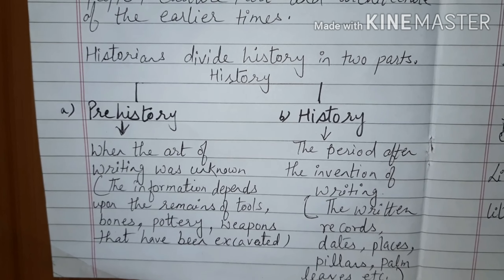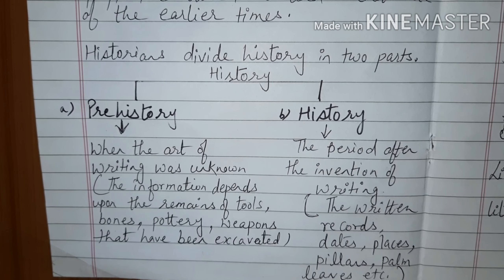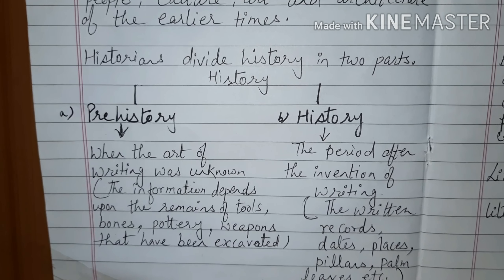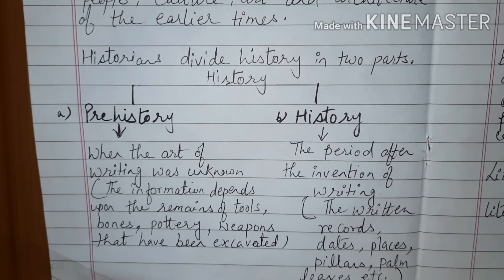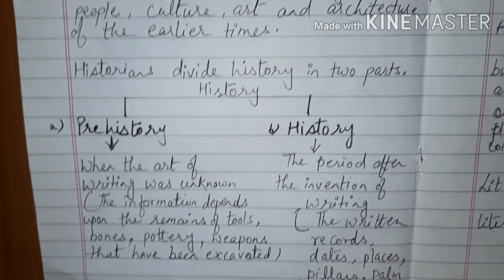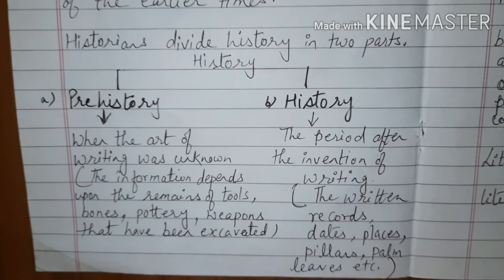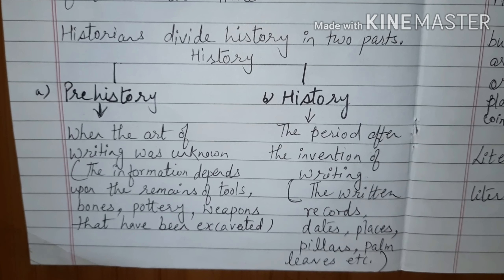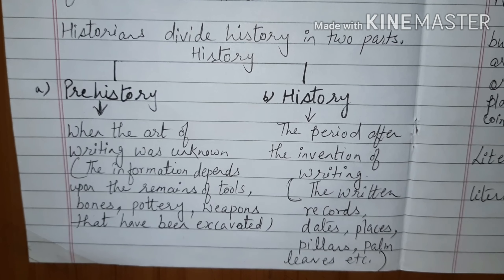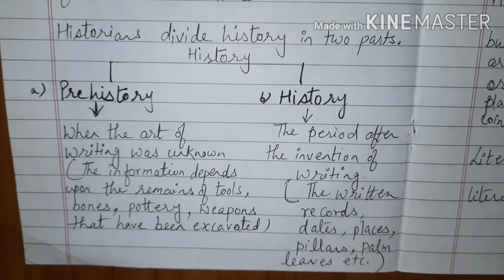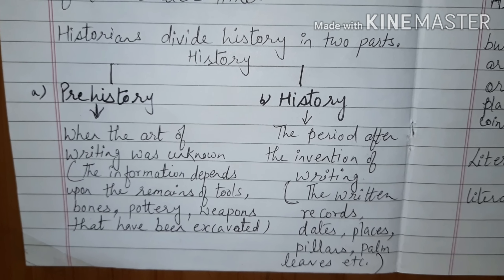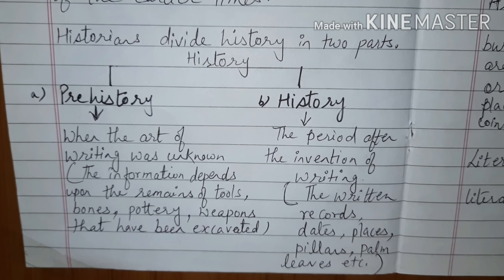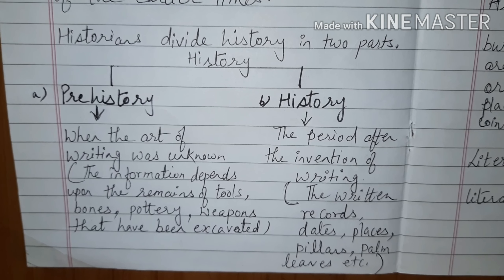What is history? History refers to the period after the invention of writing. The written records, dates, names of places, and people — which may be on bhoshpatras, palm leaves, or pillars — are sources of information. History is generally categorized into three periods, namely ancient, medieval, and modern.